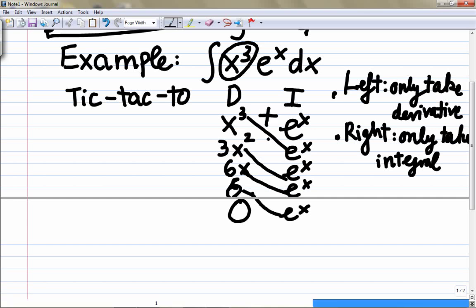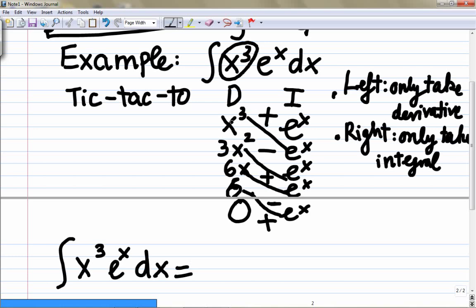6 goes to e to the x. Okay, and then tic-tac-toe starts with the positive term: positive, negative, positive, negative, and positive. Let's see how can we write down the integral integration by parts result.